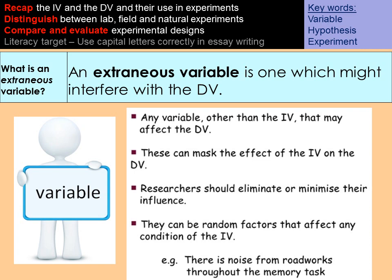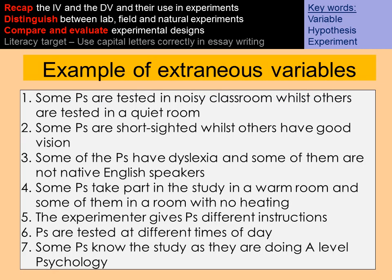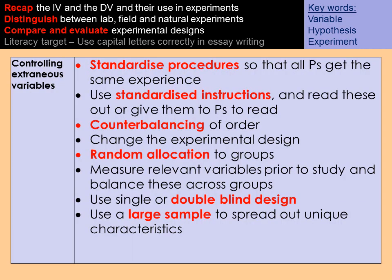To control extraneous variables you could implement a standardized procedure so all participants get exactly the same experience — this might be through standardized instructions or a standardized task. You can counterbalance the order of the experimental design, randomly allocate participants to groups, use a single or double blind design, or use a large sample to spread out any unique characteristics.